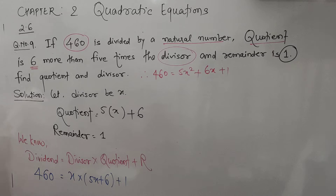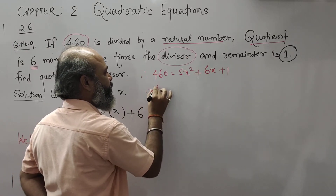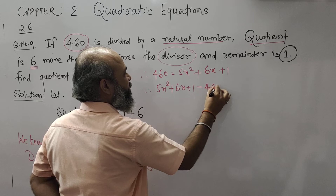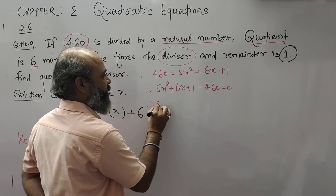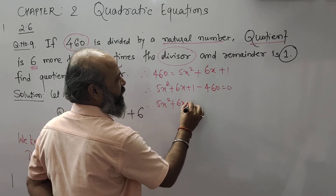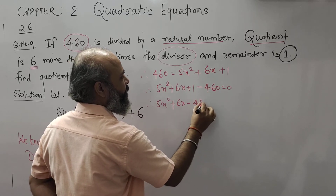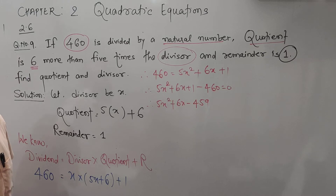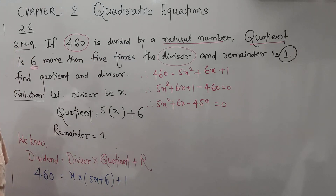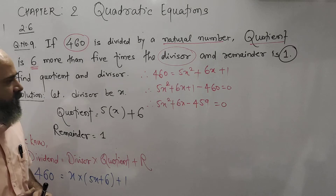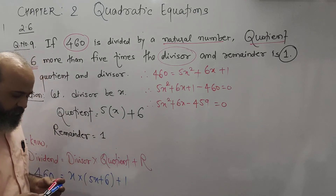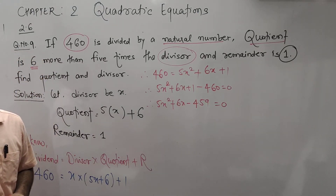Now transfer this value to the right-hand side. Therefore you will get 5x² + 6x + 1 − 460 = 0. Therefore 5x² + 6x − 459 = 0. This is a quadratic equation. We will solve this quadratic equation by the formula method to find the roots.